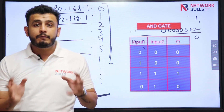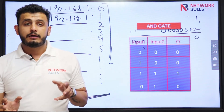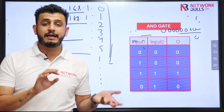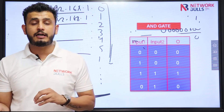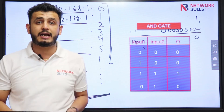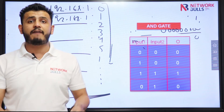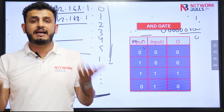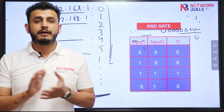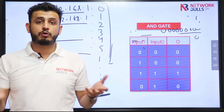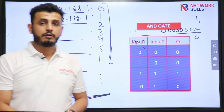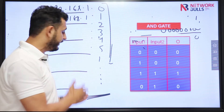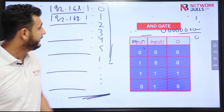If you want to check whether two IPs belong to the same network or different networks, you just have to check the network bits. If they are the same, it means they belong to the same network. Now let's concentrate on broadcast ID.